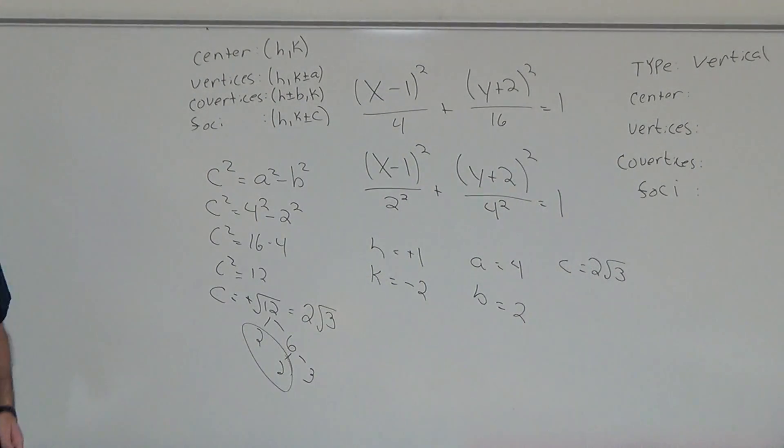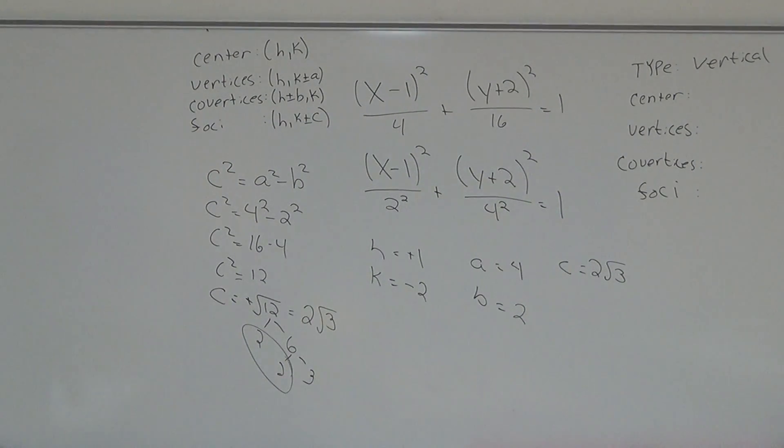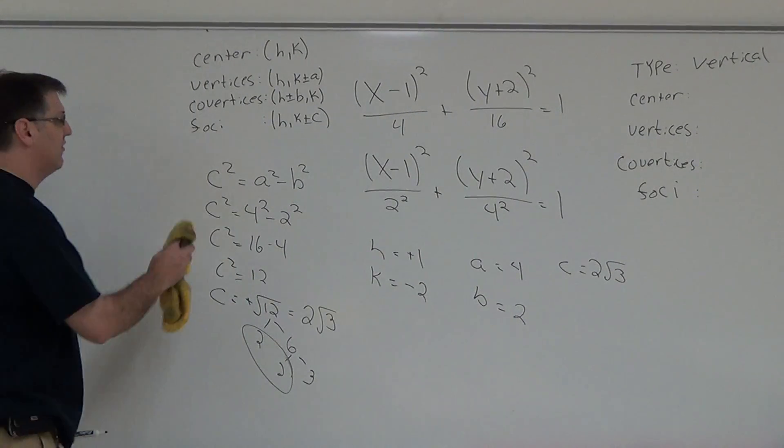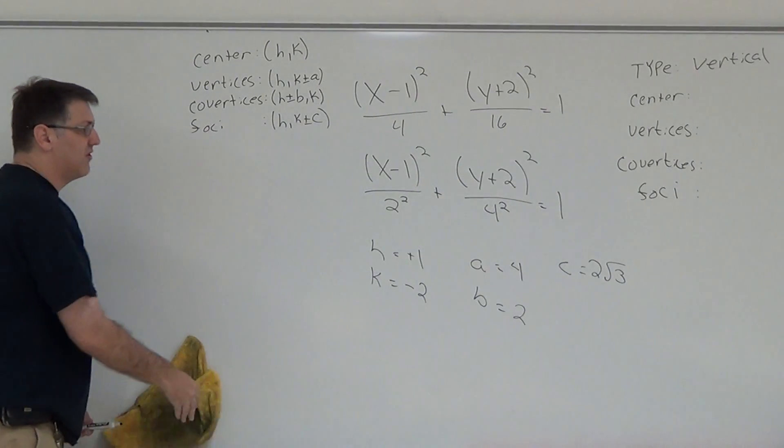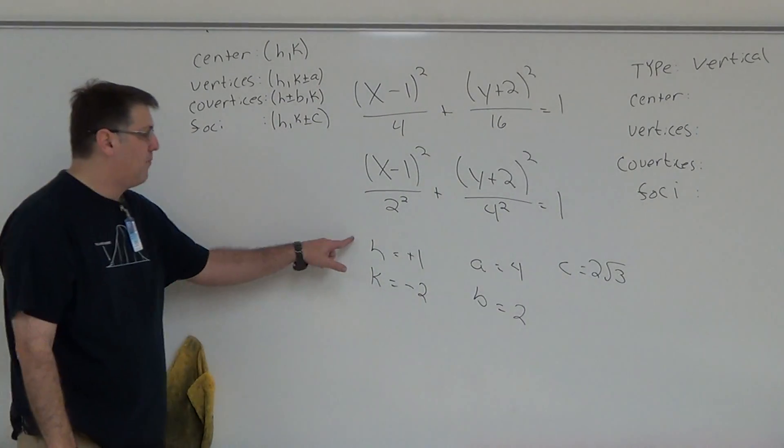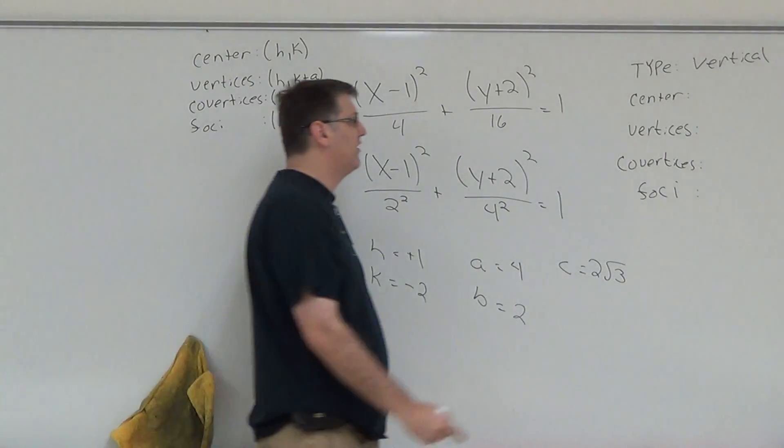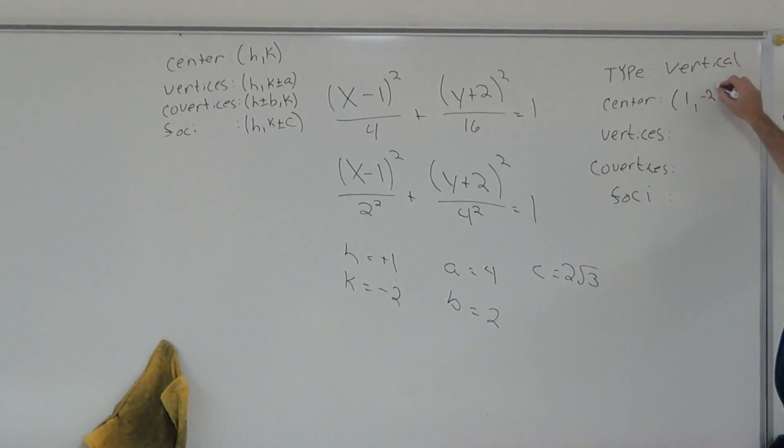Once you have your H, your K, your A, your B, and your C, you're now able to answer your center, your vertices, your co-vertices, and your foci. So here we go. My center is just H, K. We have a positive 1 and a negative 2, therefore my center is 1, negative 2.